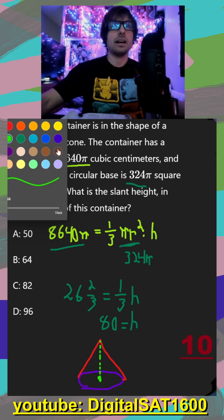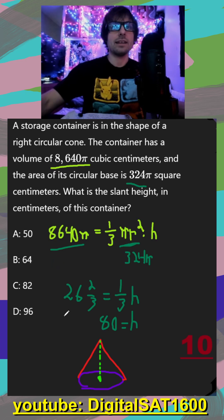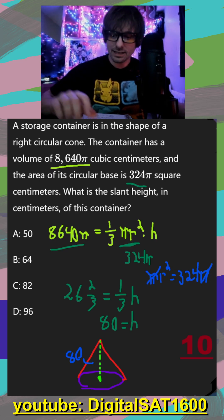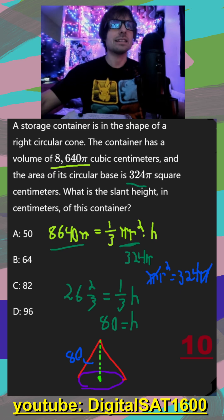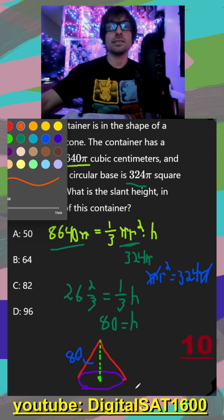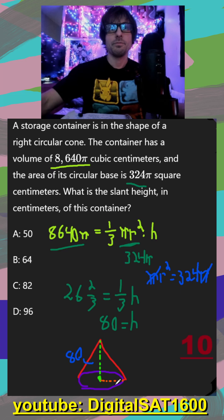So we can start to label stuff now. We know that our height here is going to be 80. We can actually use this to solve for our radius too, we can say πr² is equal to 324π, cancel out your πs, and then I can take the square root of 324, and I get 18. So we just solved for our radius as well, that's going to be down here. That radius is 18.